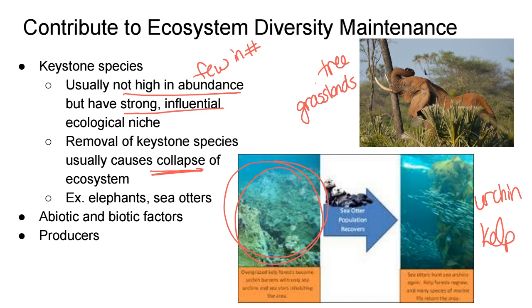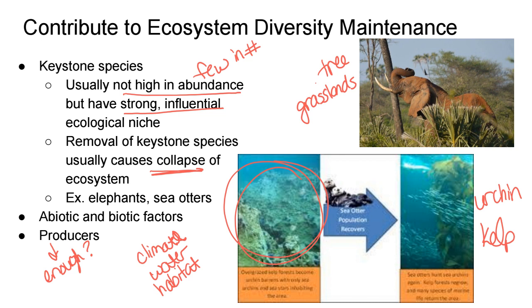In addition to keystone species, abiotic and biotic factors can impact ecosystem stability. Major climate or temperature changes, drought, major water changes, and habitat destruction can make an ecosystem collapse. We also need to consider whether there are enough producers bringing enough energy into the ecosystem to support the trophic levels above them.